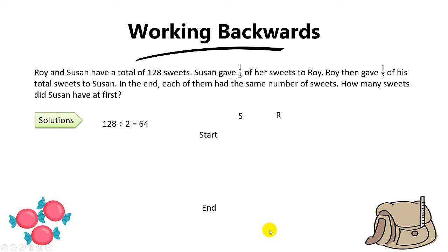It means that each of them had 64 in the end. And you need to work backwards to find the number of sweets each of them have at first. So now let's apply working backwards concept. When you work backwards, you must work from here, then back to here. Make sense? Because they are working backwards. So from here, go to here, then go to here.